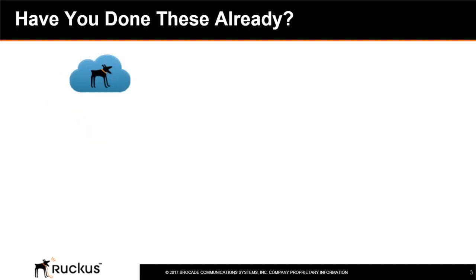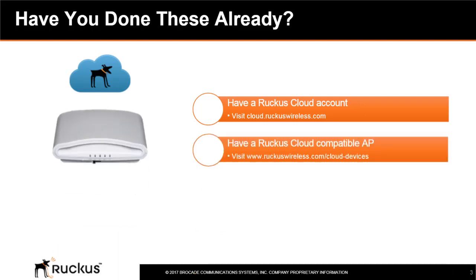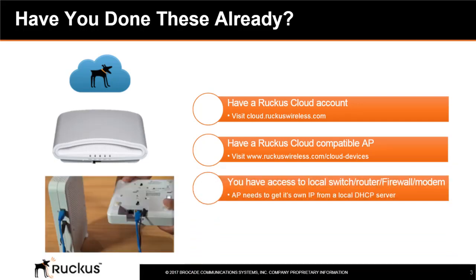Prior to viewing this module, the user should have completed the following prerequisites: they have successfully created a Ruckus Cloud account, which is paid or trial; the user has one or more Ruckus 11AC access points connected to their local network; the Ruckus access point has been powered up with a DC power supply or is receiving PoE power from the local switch or router; and an Ethernet cable has been plugged into the local broadband router or WAN switch with DHCP enabled and connected to the internet.